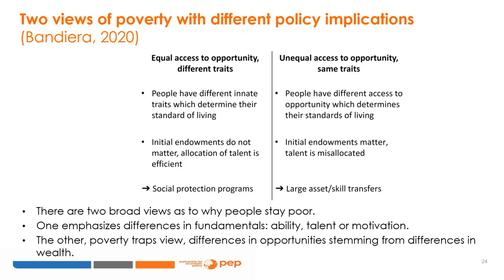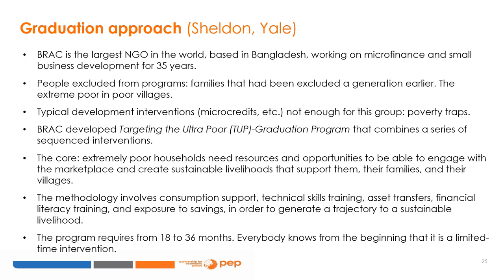If we believe individuals have unequal access to opportunity, then initial endowments matter and talent is misallocated, so we need programs providing large asset and skill transfers to escape poverty traps. These are two broad categorizations — one emphasizes differences in fundamentals such as ability, talent, or motivation, while the poverty traps view highlights differences in opportunities stemming from differences in wealth. The graduation approach was developed by BRAC, the largest non-governmental organization in the world, based in Bangladesh, which has been working on microfinance and small business development for 35 years.